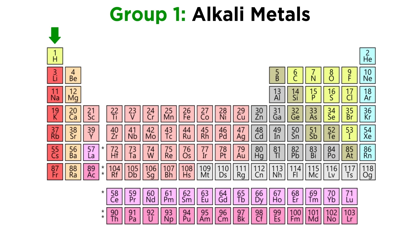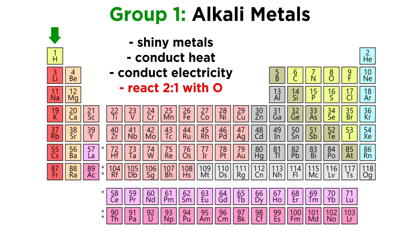Group one is called the alkali metals. These include lithium, sodium, all the way down to francium. These elements are shiny metals that conduct heat and electricity, and react with oxygen atoms in a two-to-one ratio.